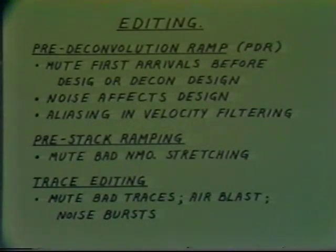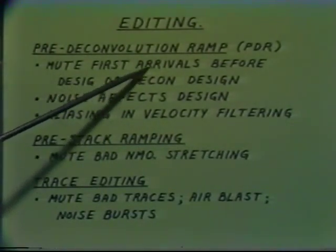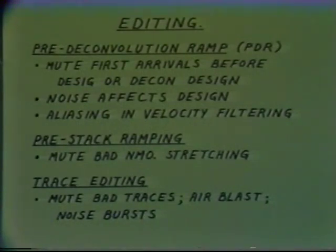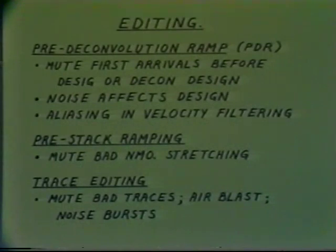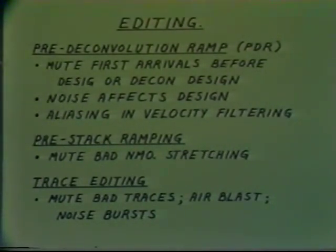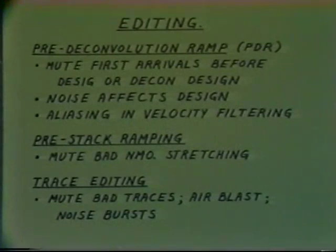The most important mute in the wavelet processing sequence is the pre-deconvolution ramp or mute. This is designed to remove the first arrival noise before designature or deconvolution processing is done. The first arrival noise affects the design of designature, since designature is designed on the whole record. The high amplitude first arrival noise must be removed or suppressed by the pre-deconvolution ramp before the designature design. In the case of deconvolution, it's not so critical because the deconvolution design gates can omit the first arrival noise.